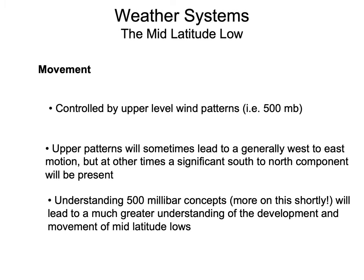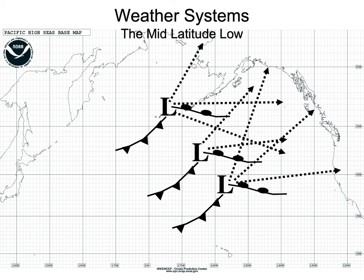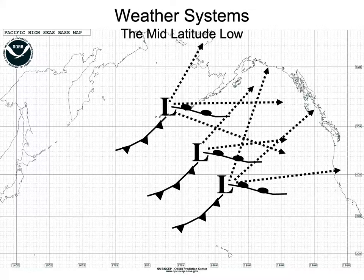Understanding 500 millibar patterns will help you understand how mid-latitude lows move. For example, if a mid-latitude low is sitting north of Hawaii and you're along the northwestern U.S. coast, it matters a lot how the system tracks: if it goes well to the north, not much impact. If it comes closer and is strong, that may lead to strong onshore winds over the northwestern U.S. and big swells. If it comes in over northern California and stays to the south, you'd see easterly winds instead — a very different situation.